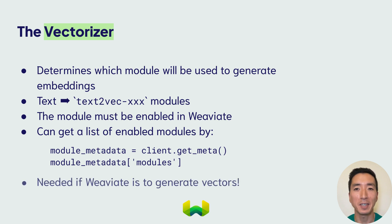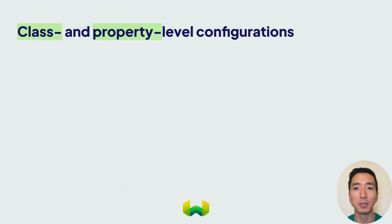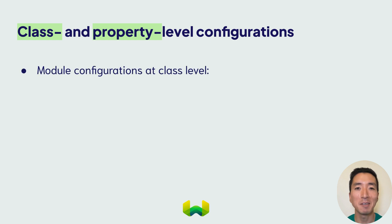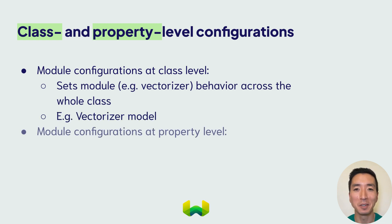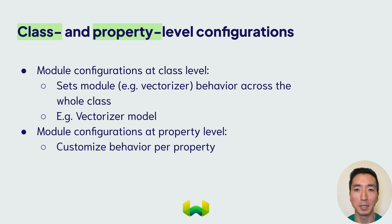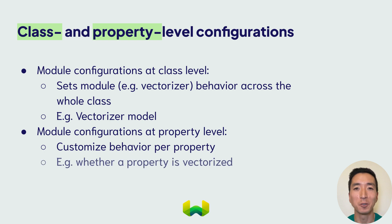You do need to select a vectorizer if you want VV8 to convert your data into vectors. You also have the option to set class and property level module configurations. Setting module configuration at the class level is used for customising module behaviour across the entire class. Likewise, module configurations at the property level customize module behaviour per property. This way, you can decide whether you want to vectorise the class or property name, or even skip the whole property altogether.